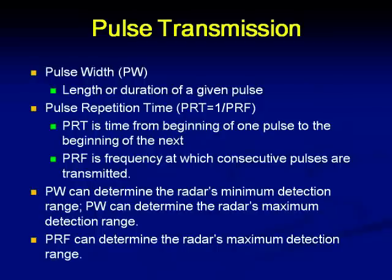Pulse width can determine the radar's minimum detection range and also the maximum detection range. The PRF can determine the radar's maximum detection range — that means how far the target can be so that it is properly detected. Why the radar is not able to detect very close targets is that when the transmitter is sending the pulse, the receiver is not connected at all. Hence, the signal reflected from a close-by target will not be received. That can be considered as a drawback of this system, but there are several other advantages by which we prefer pulsed systems.